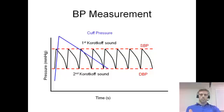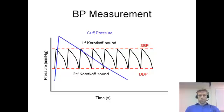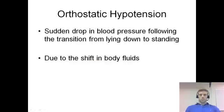This continues as cuff pressure is released until the second Korotkoff sound — the last sound you hear. After that, blood pressure is greater than cuff pressure at all times, so blood flows freely and you can't distinguish any sounds. The last sound heard is the second Korotkoff sound, and that corresponds to your diastolic blood pressure. Those two sounds allow you to identify systolic and diastolic blood pressure, and that's how blood pressure is measured.